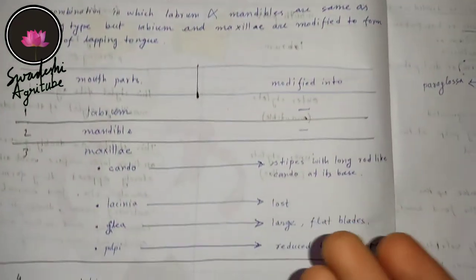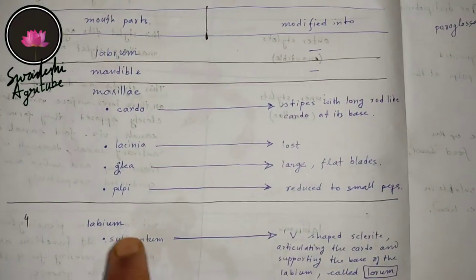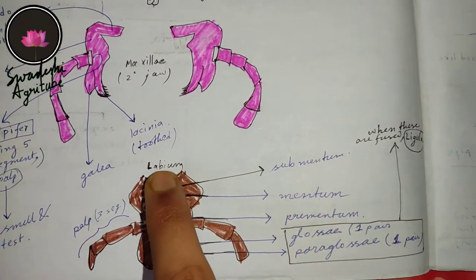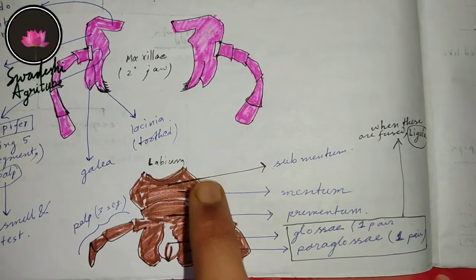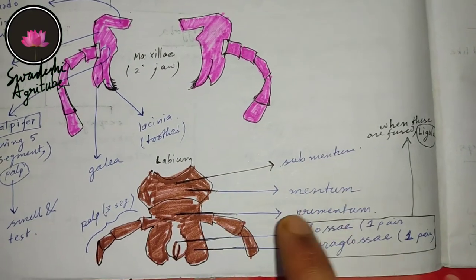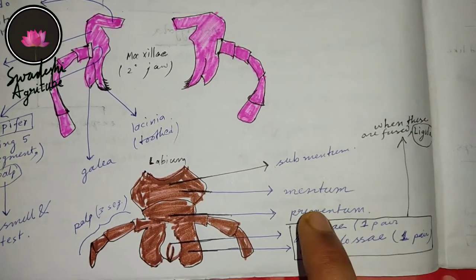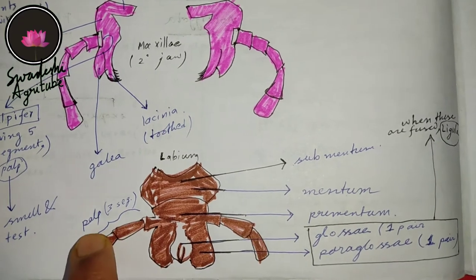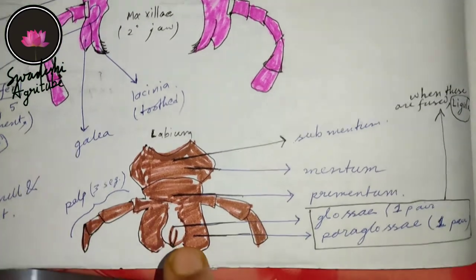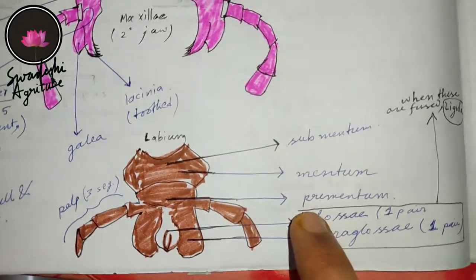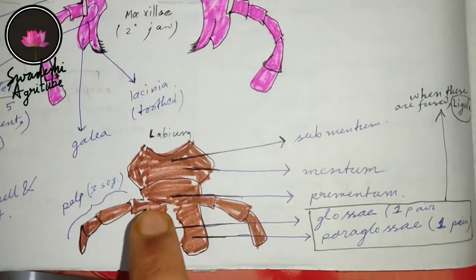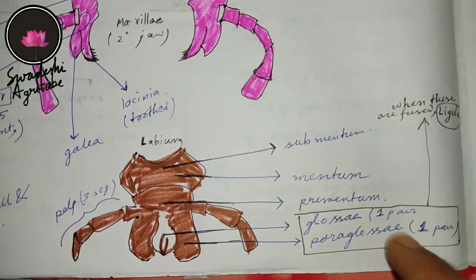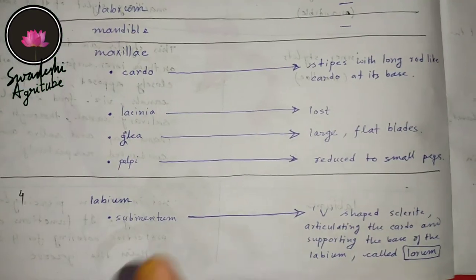Talking about the labium — the main modification is seen in the labium part. In labium there are three parts: submentum, mentum, and prementum. In the prementum there is a three-segmented palp, also an inner part called glossa, and one pair of outer parts called paraglossa.